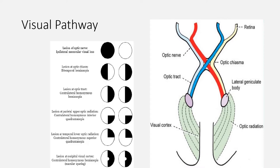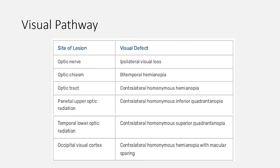These are all lesions of the visual pathway, and a table also shows all the lesions. Note that before the optic chiasm, the lesions cause ipsilateral effects, and after the optic chiasm the lesions cause contralateral effects. But the lesion of the optic chiasm itself has no ipsilateral or contralateral description because we have only one optic chiasm. Note also that for optic radiations, the lesion at the upper radiations causes inferior effects. Only lesions at the visual cortex are associated with macular sparing.